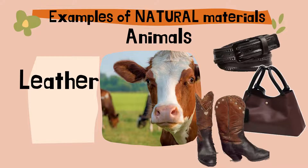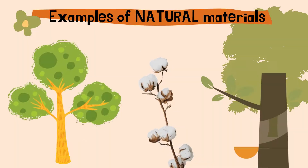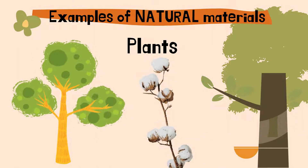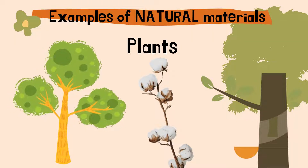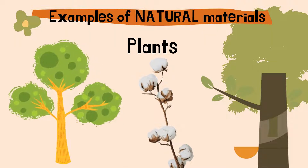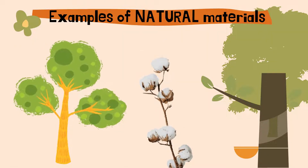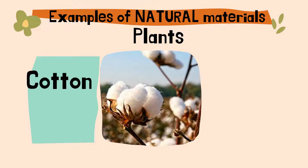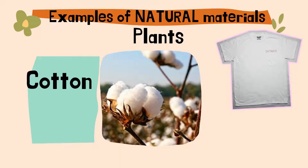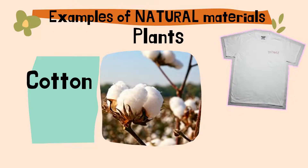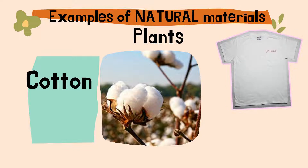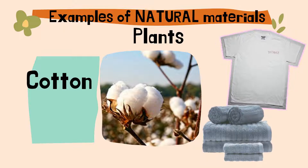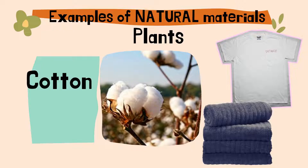Now let us move to the natural materials that come from plants. The first natural material that comes from plants is cotton. Cotton comes from cotton plants. It is used to make things like t-shirts, cotton towels, and many other things.